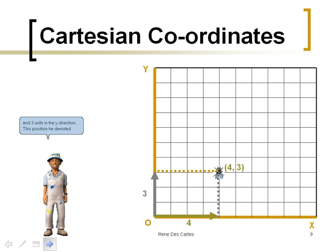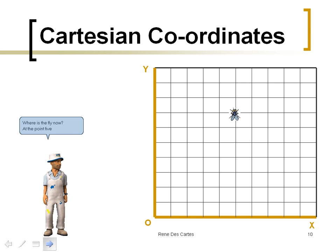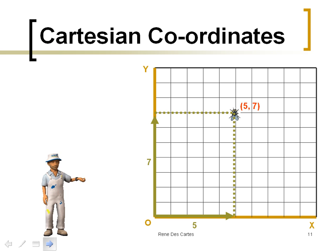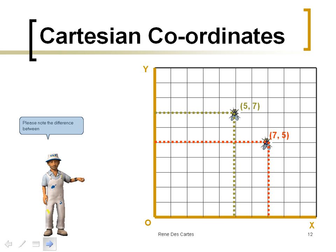This position he denoted by the ordered pair (4, 3). Where is the fly now? At the point (5, 7). Please note the difference between (5, 7) and (7, 5).